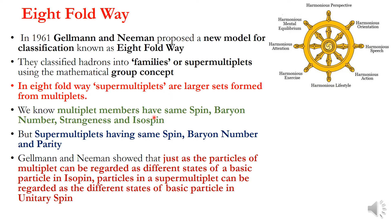However, members of different multiplets within a supermultiplet may have different strangeness and different isospin. Gell-Mann and Ne'eman showed that just as particles of a multiplet can be regarded as different states of a basic particle in isospin, particles in a supermultiplet can be regarded as different states of a basic particle in unitary spin.